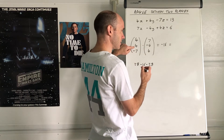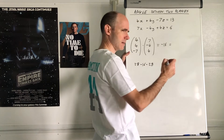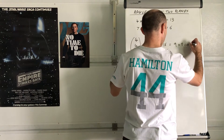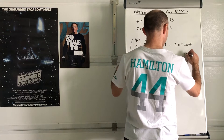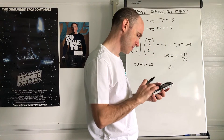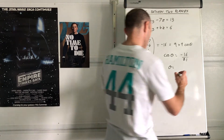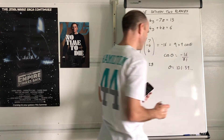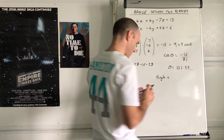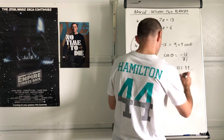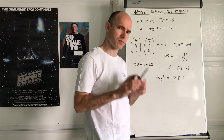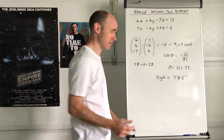So it equals the cosine of theta times the moduli. The modulus of the first normal: 49 + 16 + 16 = 81, so that's 9. The second normal has the same numbers, so also 9. Therefore 9 × 9 × cos θ, giving cos θ = -16/81. The inverse cosine gives 101°, but since we want the acute angle, the answer is 78.6°.